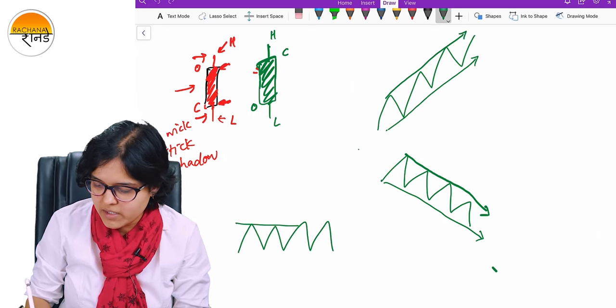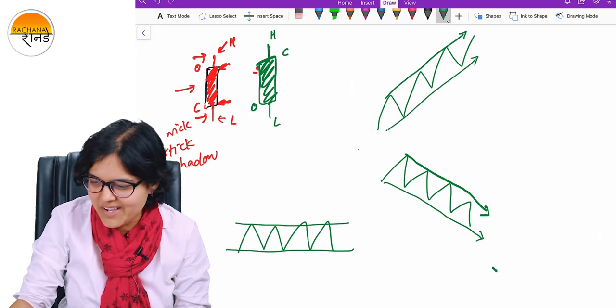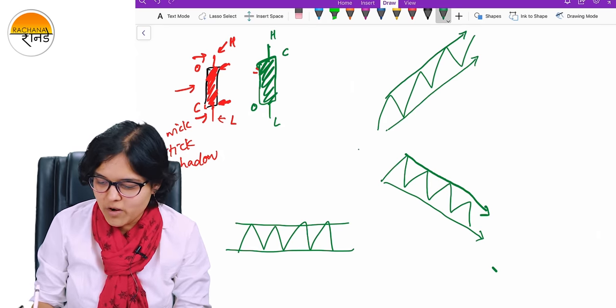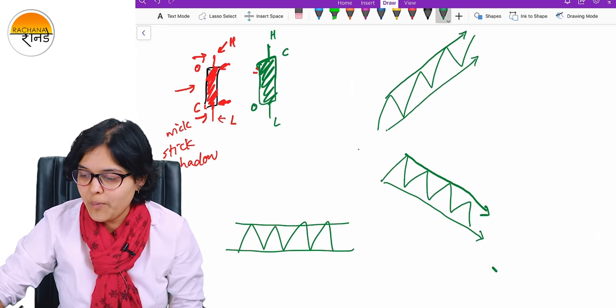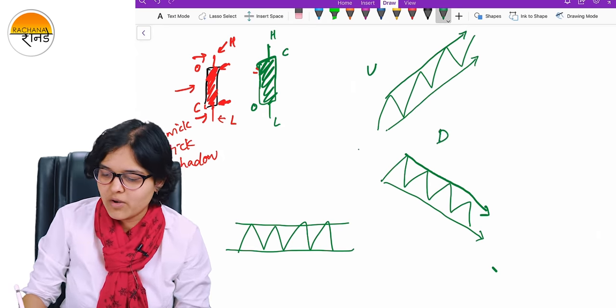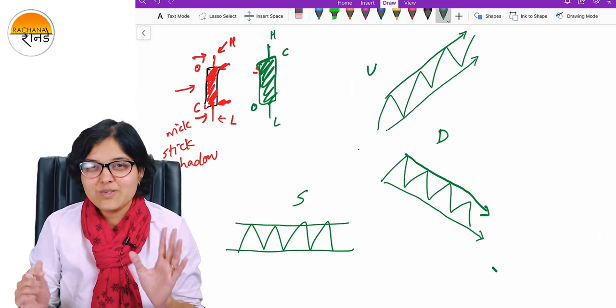And third, if you remember, we talked about something known as a sideways trend. Sideways trend is something like this - stock is stuck in a specific range. It's not able to cross a specific high, not able to cross a specific low. That was about my second video on technical analysis. This was a quick revision for you.